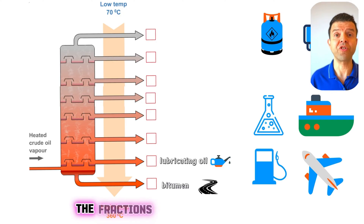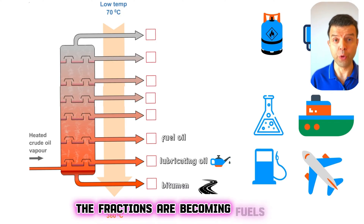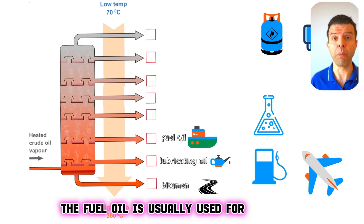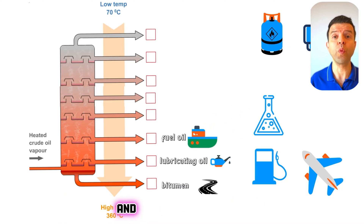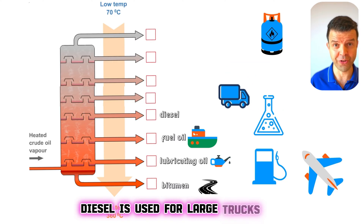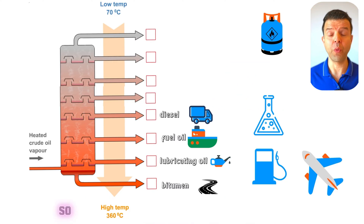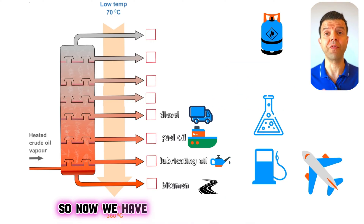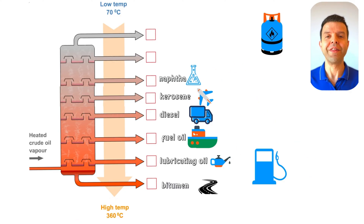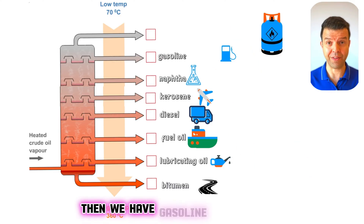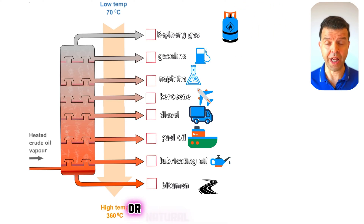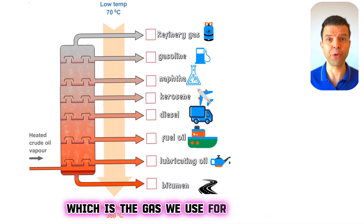Starting from here, the fractions become fuels. We have fuel oil, which is used for boats, and diesel, which is used for large trucks. Going further up the column, we have kerosene for airplanes and naphtha, which is a chemical solvent. Then we have gasoline for cars. And finally, we have refinery or natural gas, which is the gas we use for cooking.